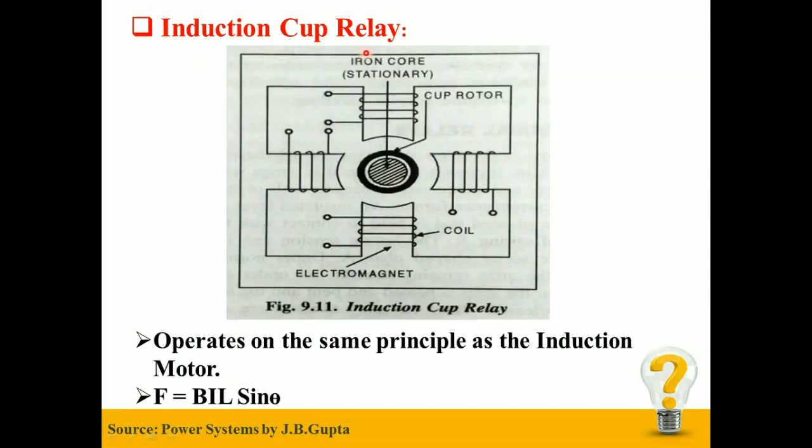Induction Cup Relay: this relay operates on the same principle as the induction motor. The relay has two or four electromagnets. The construction shown in the figure has four electromagnets. A stationary core is placed between these electromagnets.